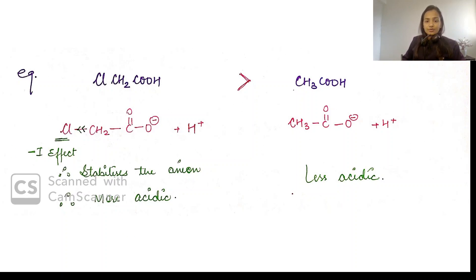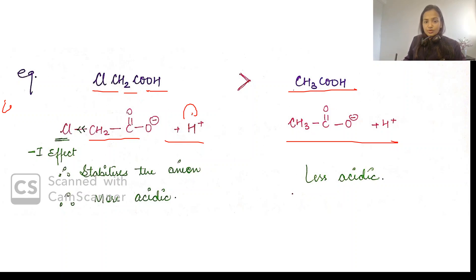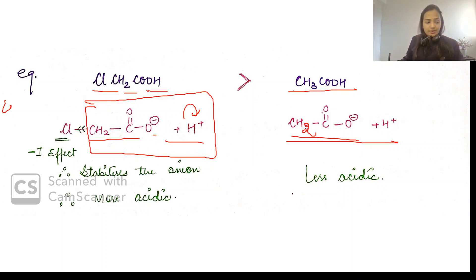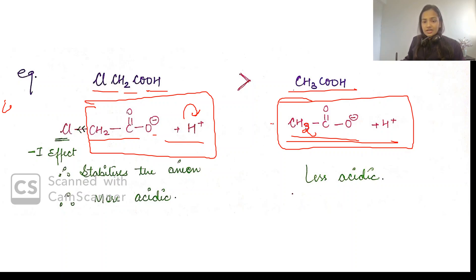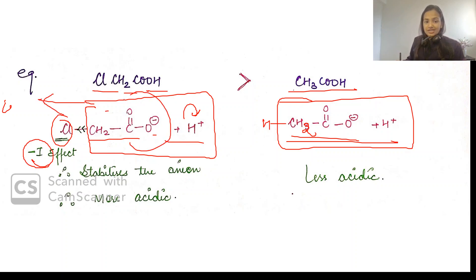So these are the ways to solve these questions. Next example: ClCH2COOH vs CH3COOH. When we lose the proton, these will be the conjugate bases. You can see that the CH2COO⁻ part is the same in each. The difference is here we have hydrogen and here we have chlorine. For halogens we only apply the inductive effect — chlorine has a strong minus-I effect, so it withdraws electrons, stabilizing the conjugate base. More stability of the conjugate base means more acidic character.